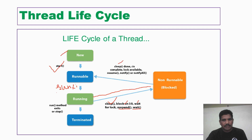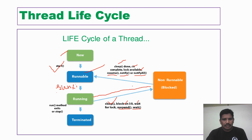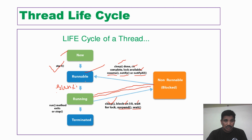When the sleep method finishes and I/O is completed, or it acquires the required lock, or the resume method is invoked, or the notify method is invoked, or notifyAll is invoked — the thread switches from blocked state back to the runnable state. One important thing to remember: the thread does not go directly from blocked state to running state; it goes from blocked state to runnable state, where it is ready for execution again.